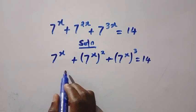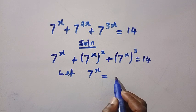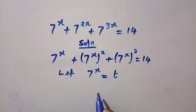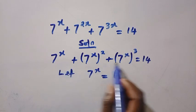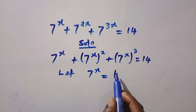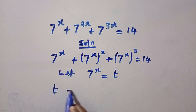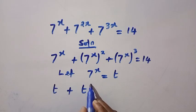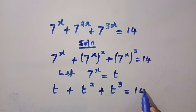If I let 7^x to be equal to another letter, if I choose t, so anywhere I see 7^x in these previous lines, I'm going to be replacing it with t. And here we have t + t^2 + t^3 = 14.